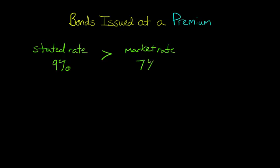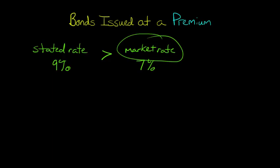Interest rates fluctuate commonly — every single day interest rates are changing. When a firm sets out to issue a bond, there's a lot of paperwork involved and it takes time. You don't just decide to issue a bond and issue it the next day. So you come up with a rate and say the market rate is 9%, but maybe it takes three months before you actually do the issuance, and by that time the market rate has changed. In this case, the market rate went down from 9% to 7%.